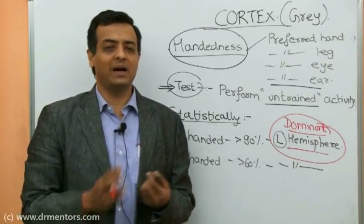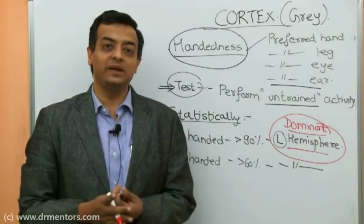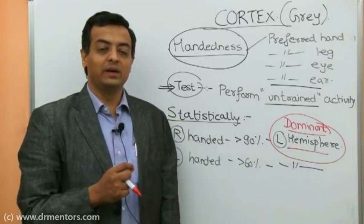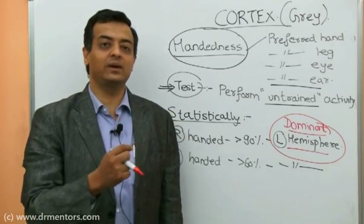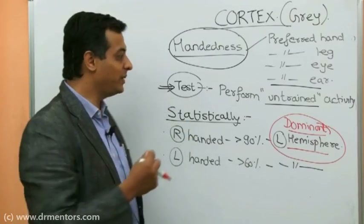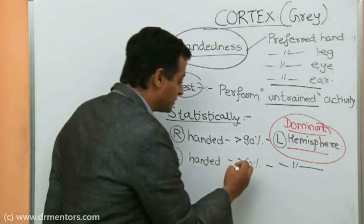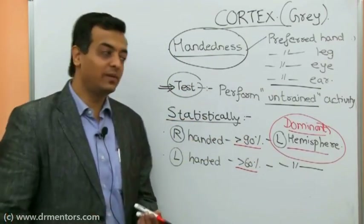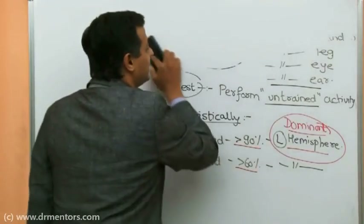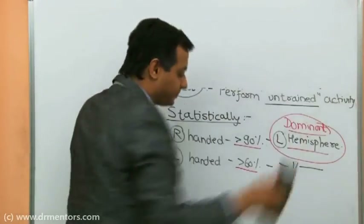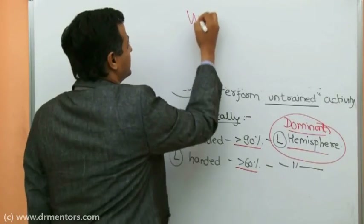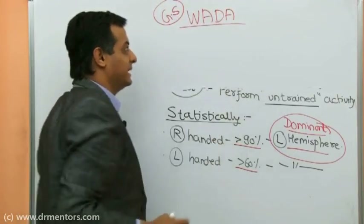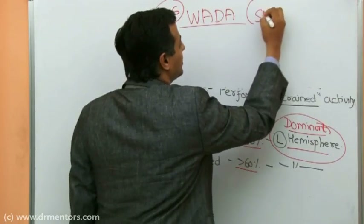When we have a left-handed person, still more than 60% have the left hemisphere as the dominant hemisphere. So across the population, the left hemisphere is more commonly the dominant hemisphere, whether right-handed or left-handed. However, statistics are rarely admissible in the ICU or the neurosurgeon's room — we need to be more concrete and sure. So what is the gold standard test? The gold standard test to detect the dominant hemisphere is called the Wada test, which uses a short-acting barbiturate.